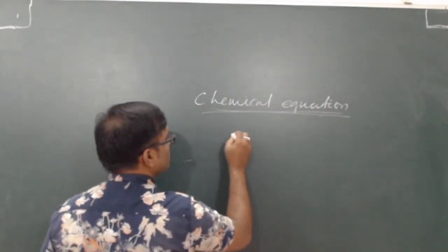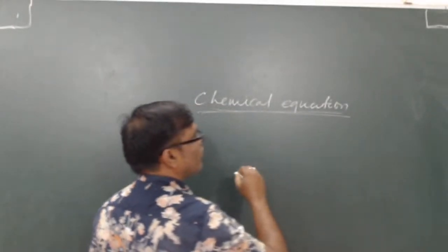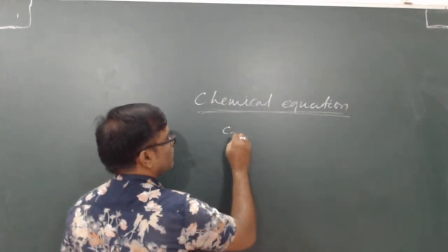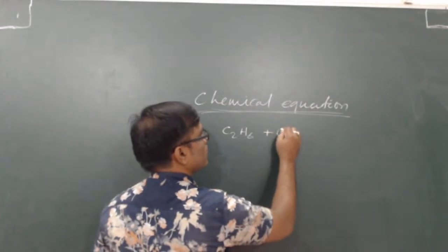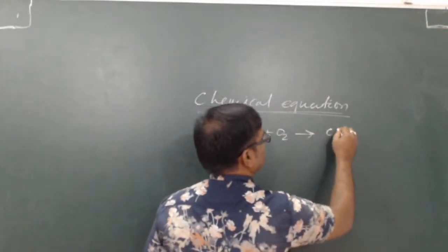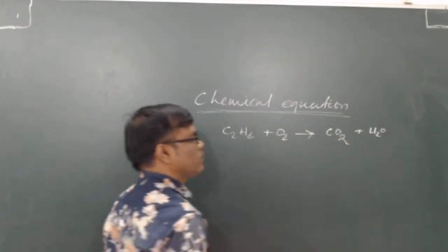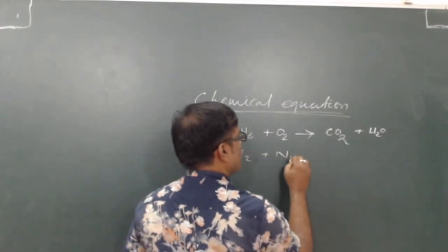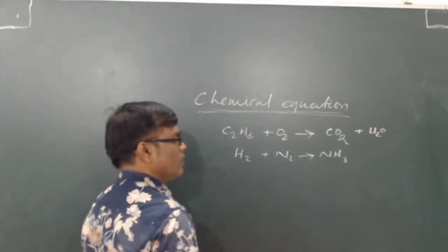When a chemical reaction is written in terms of symbols and formulae, suppose ethane C2H6 undergoes oxidation — it gives carbon dioxide and water. When H2 reacts with N2, it gives ammonia, NH3.